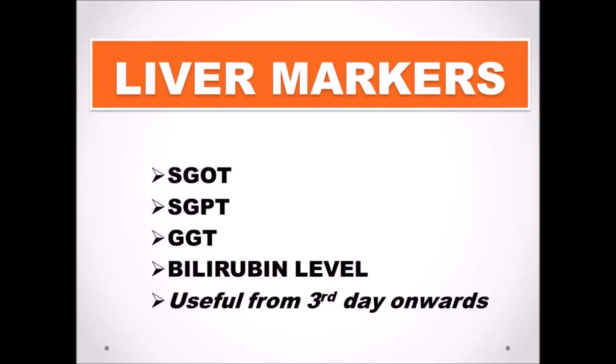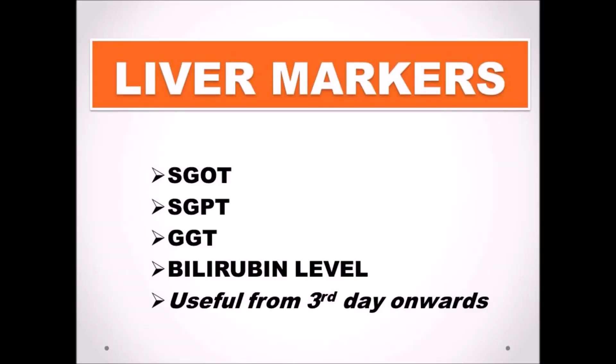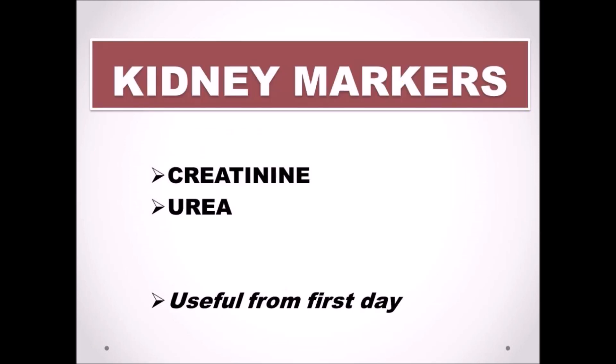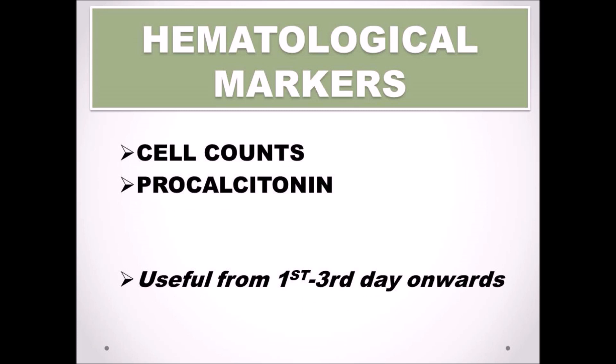Apart from these markers, there are some other tests which can be done as well — for example, liver-related enzymes such as SGOT, SGPT, and GGT, along with total bilirubin; heart-related markers such as troponin, BNP, myoglobin, and CKMB; prothrombin time; and kidney-related tests such as creatinine and blood urea; as well as hematological markers such as procalcitonin, lymphocyte count, and eosinophil count.